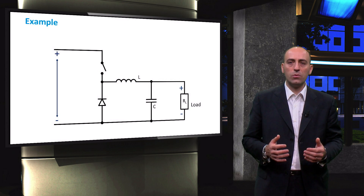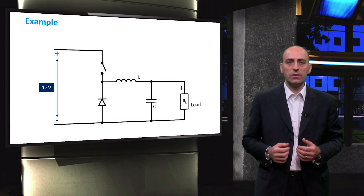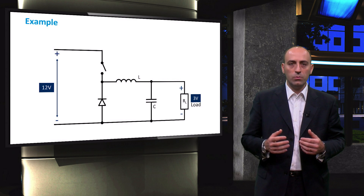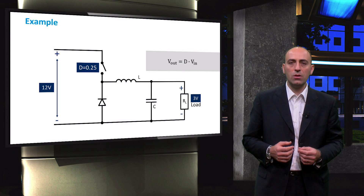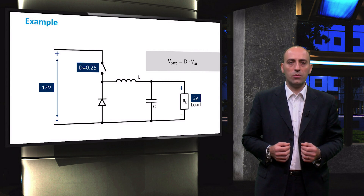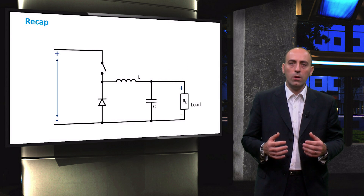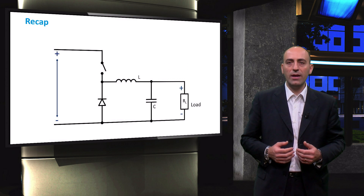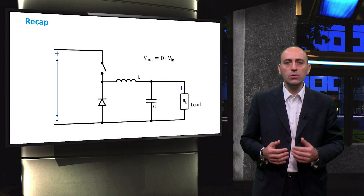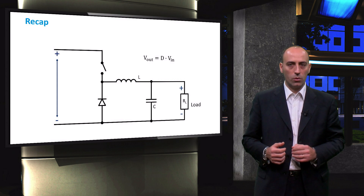As a concluding example: if we have 12 volts at the PV side and need to deliver 3 volts at the load side, using the equation Vout = D × Vin, we need a DC-DC conversion with a duty cycle of 0.25. So in this video, we learned how to create a DC-DC buck converter and how, by varying the duty cycle, we can tune the output voltage — in this case always lower than the input voltage.